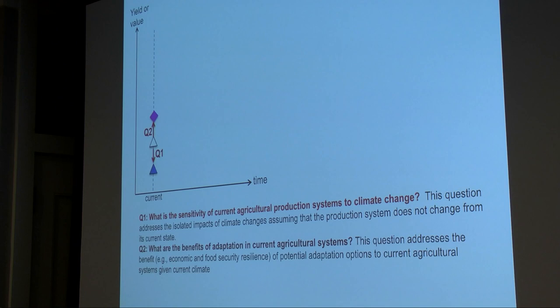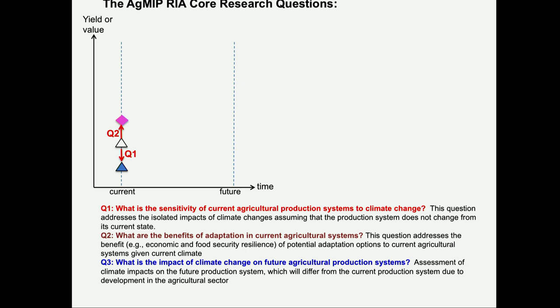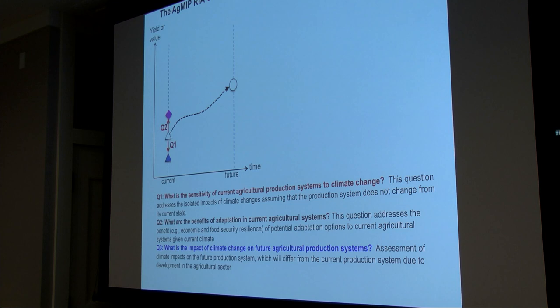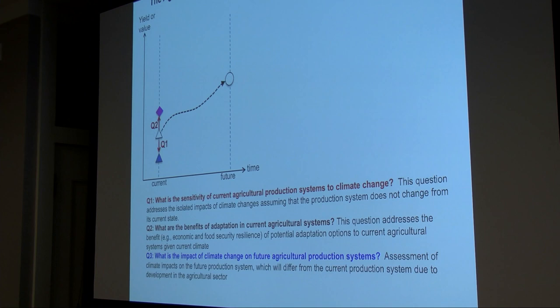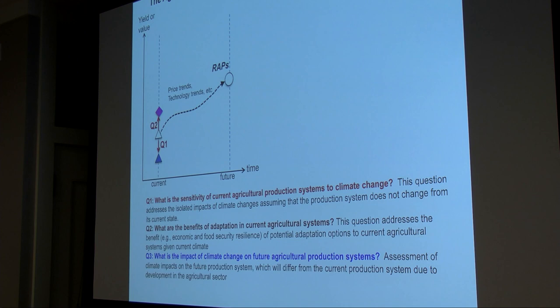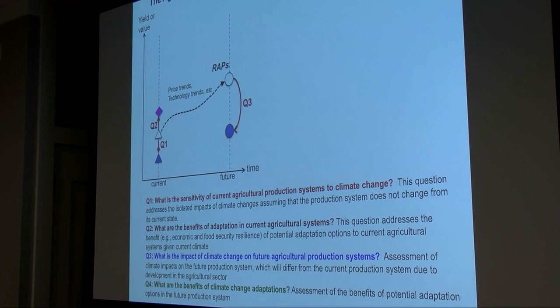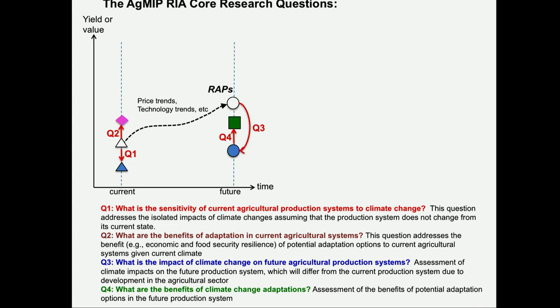If we want to do the analysis in the future, say 2050 — what is the impact of climate change on future agricultural production systems? The key is we need to take this production system and move it into the future, but many conditions change: economic conditions, technological change, prices. That's why we need the representative agricultural pathways to represent conditions in that future world. If we bring climate change, we get the results for core question three, and if we adapt in that future world, that's question four. In phase one of ACMI, we only had questions one, three, and four, but stakeholders strongly recommended we include question two, so this new phase added it.